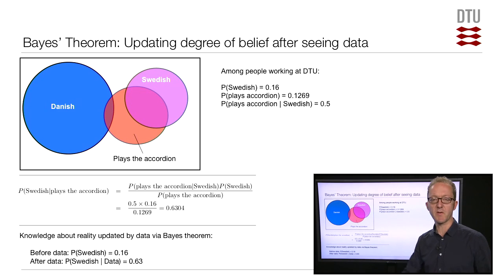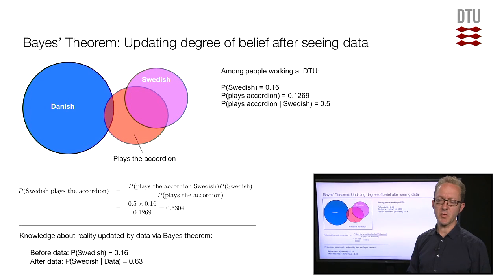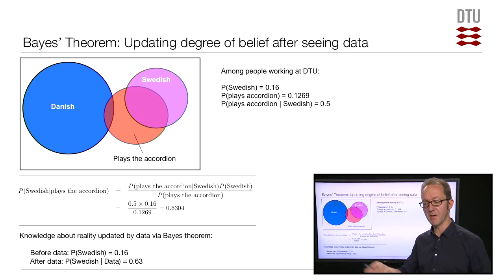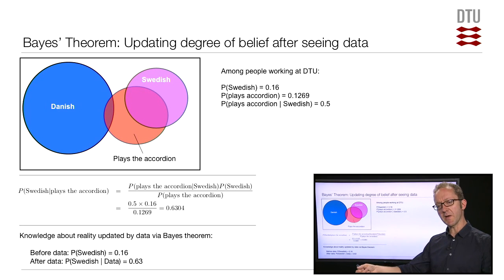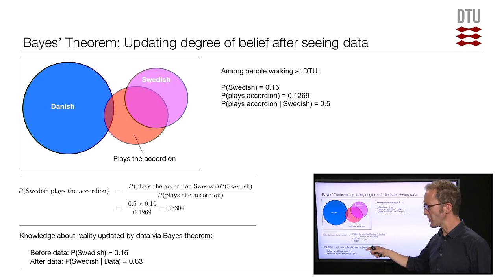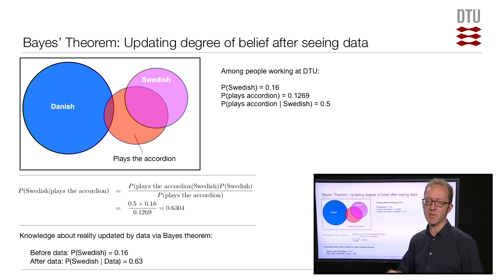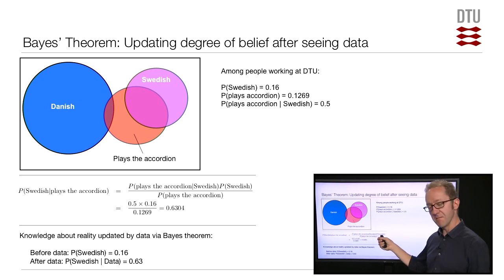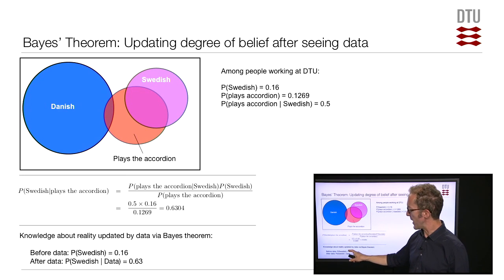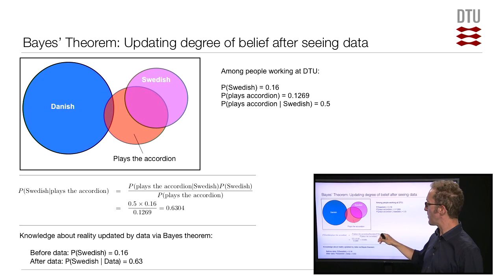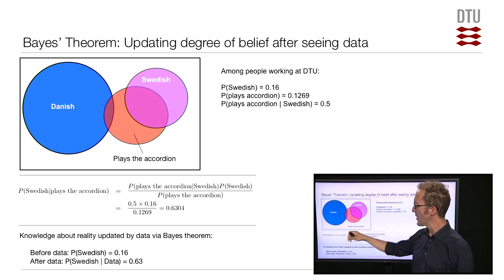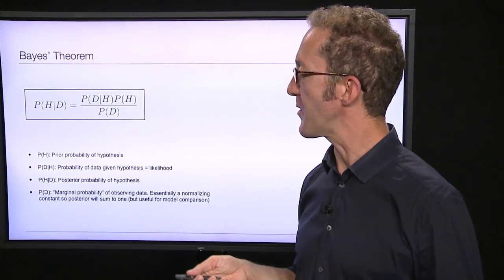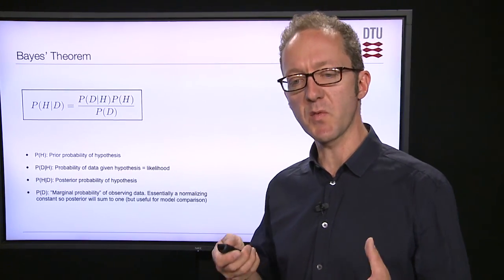Imagine you're at the DTU annual ball and arrive at a table with an empty chair. Before arriving, you know there's a 16% chance the person will be Swedish. Then you notice an accordion on the chair. Using Bayes' formula, you update your knowledge based on that observed data and now believe there's a 63% chance the person is Swedish. Bayes' formula is a way of moving from a prior probability to a posterior probability: a stringent method of updating knowledge about reality.